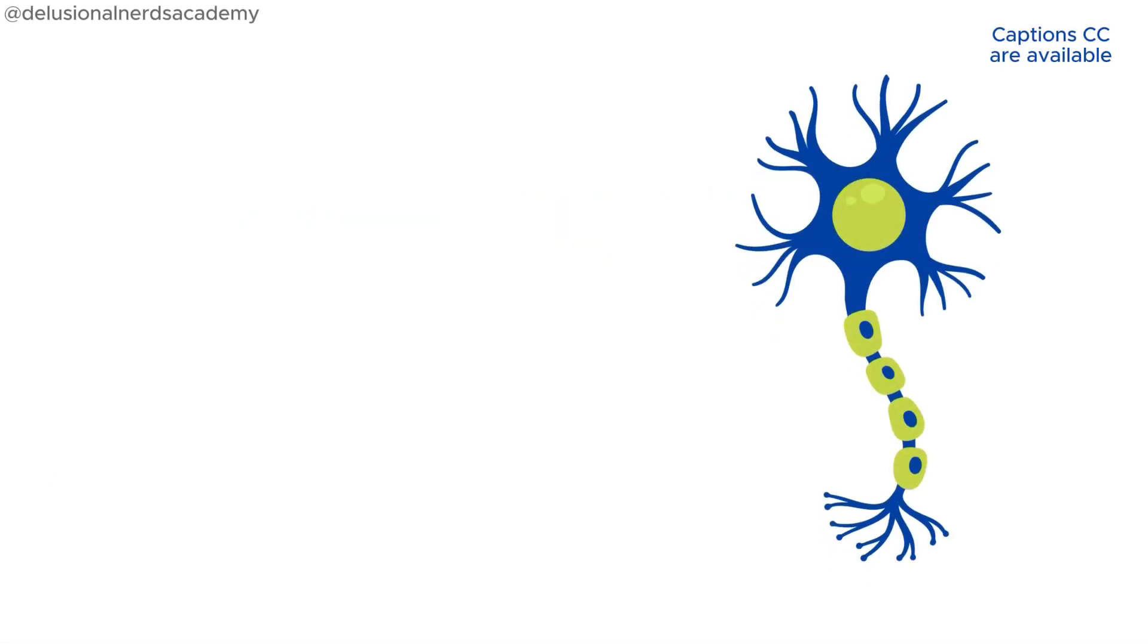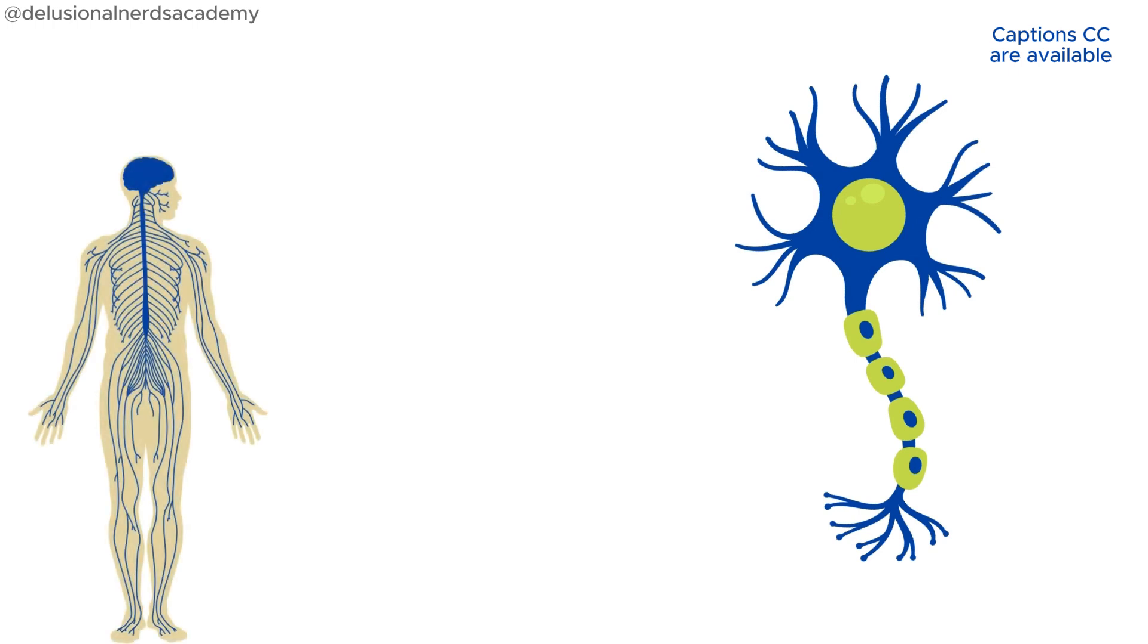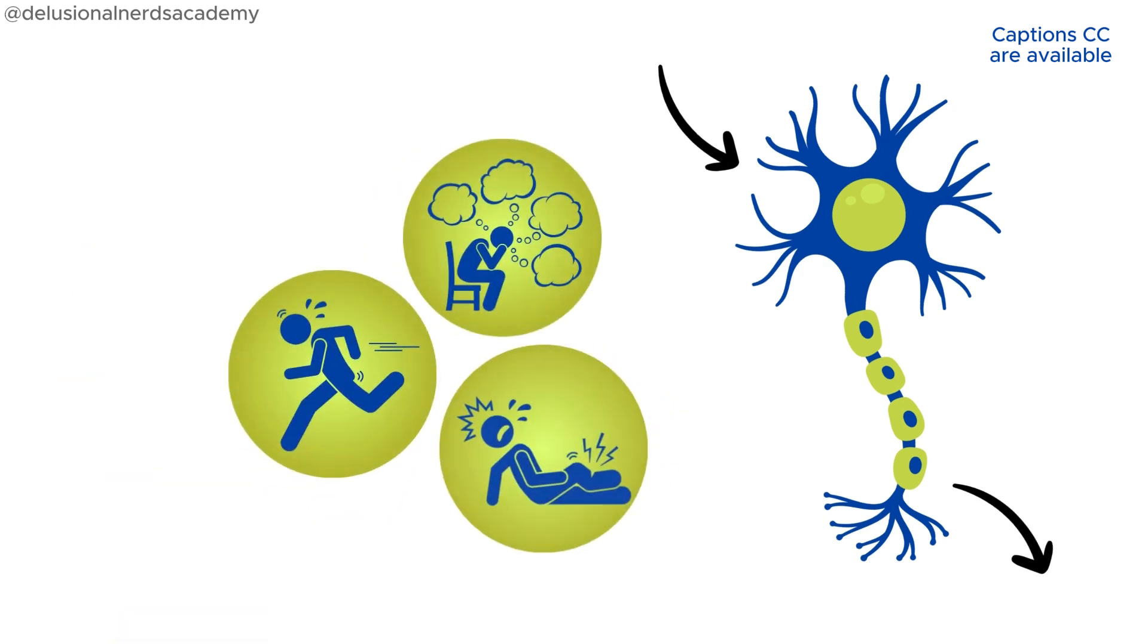Neurons are the fundamental building blocks of the nervous system. They are specialized cells that send and receive electrical signals allowing us to think, move and experience sensations.